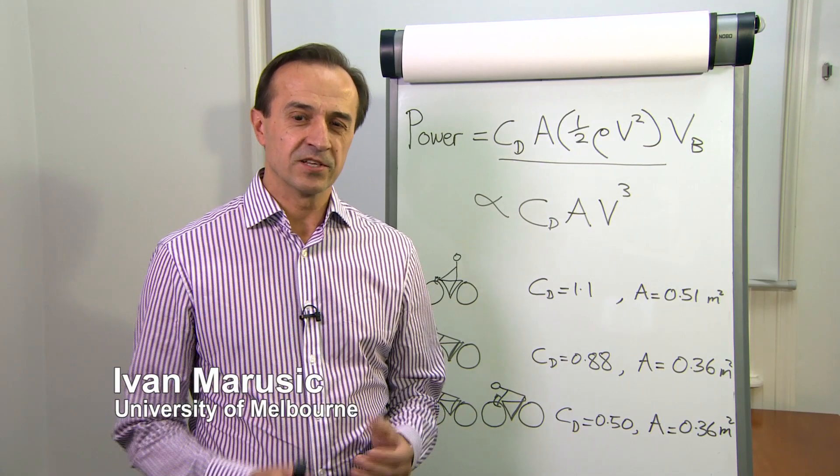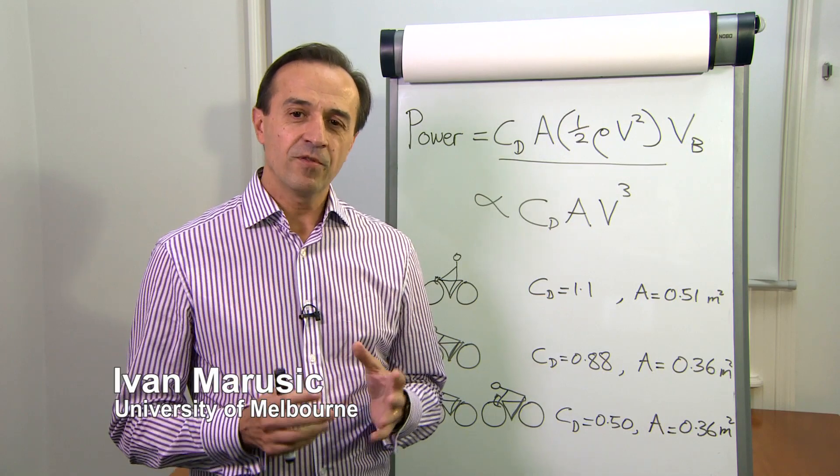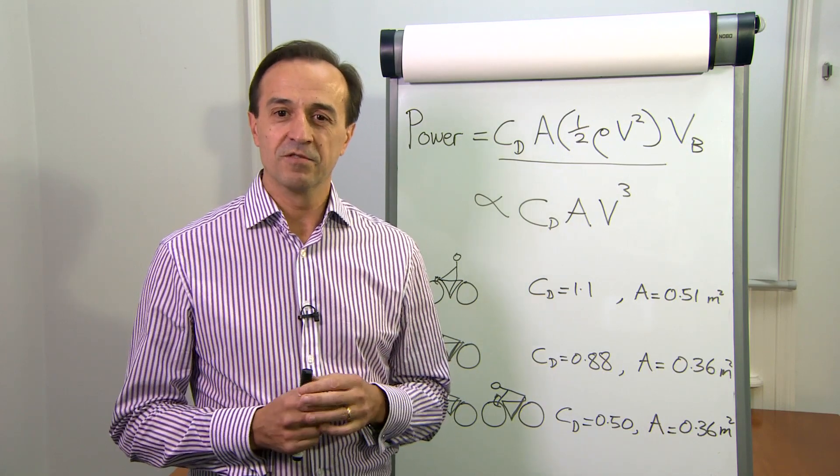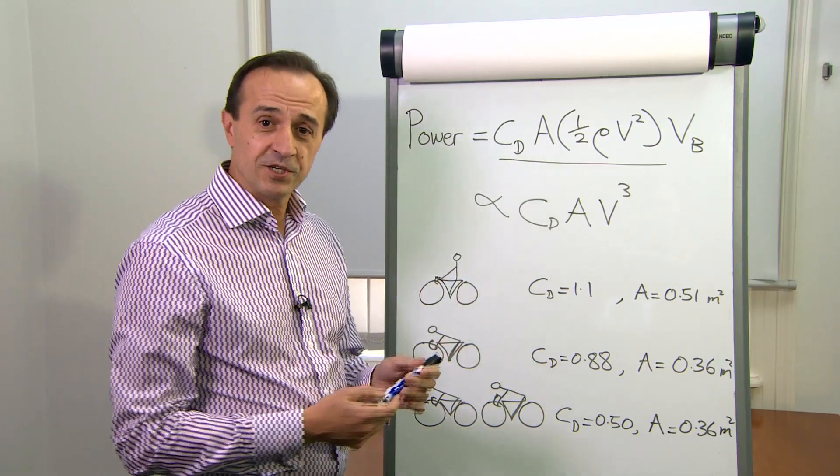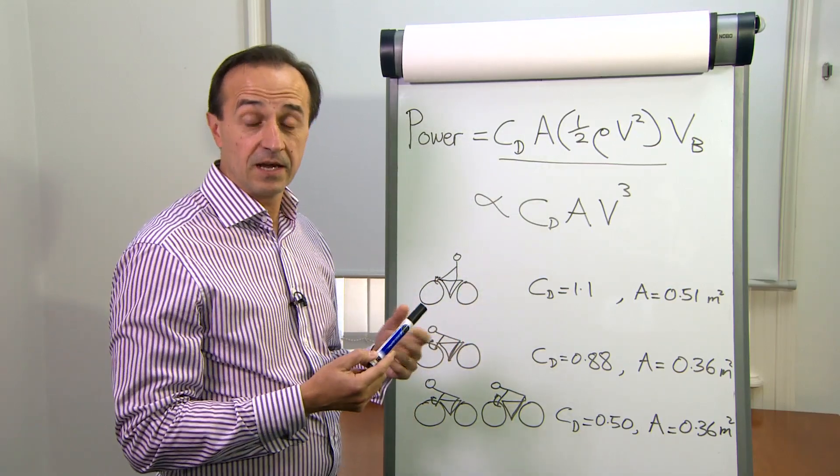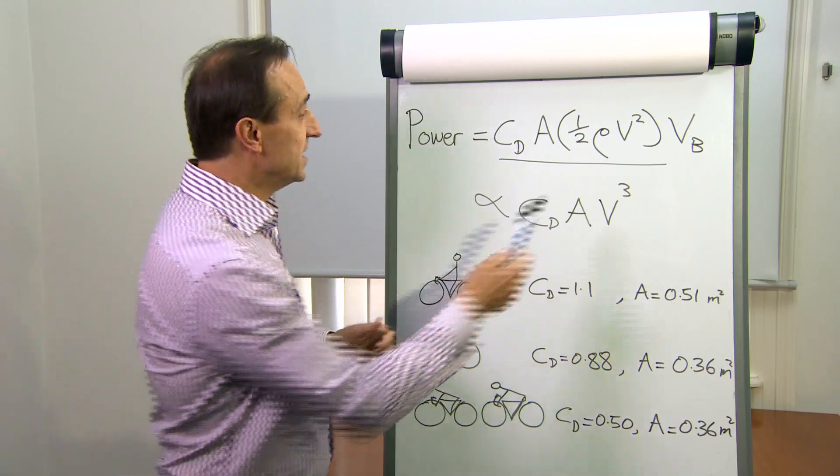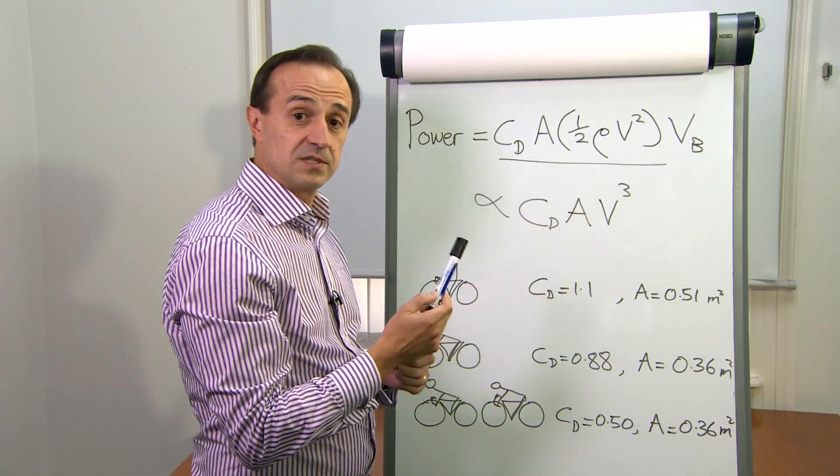An elite cyclist can generate a certain amount of power, and for that rate of work, he or she would like to go as fast as possible. We can understand the aerodynamics with this equation. It tells us how the power to overcome aerodynamic drag, which is by far the most dominant, is related to the speed at which the cyclist is traveling.